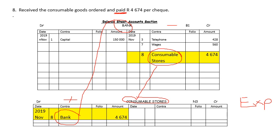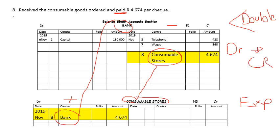Every transaction must be recorded into two accounts — this is the double entry principle. It says that one account must be a debit and the other account is going to be a credit. Every transaction we've done so far, we've done this. Bank was credited. Consumable Stores was debited.